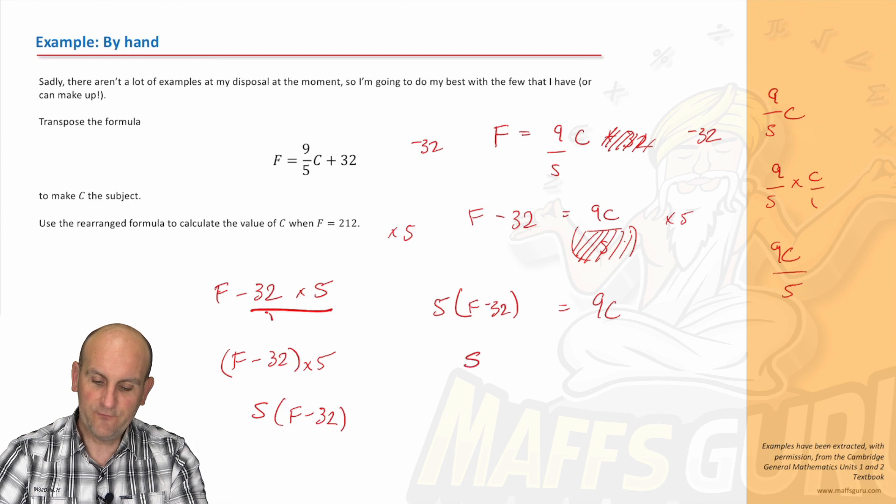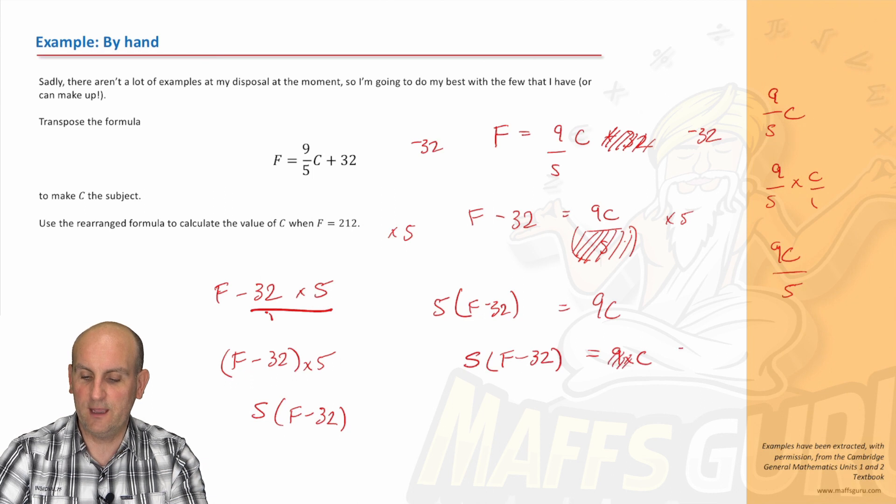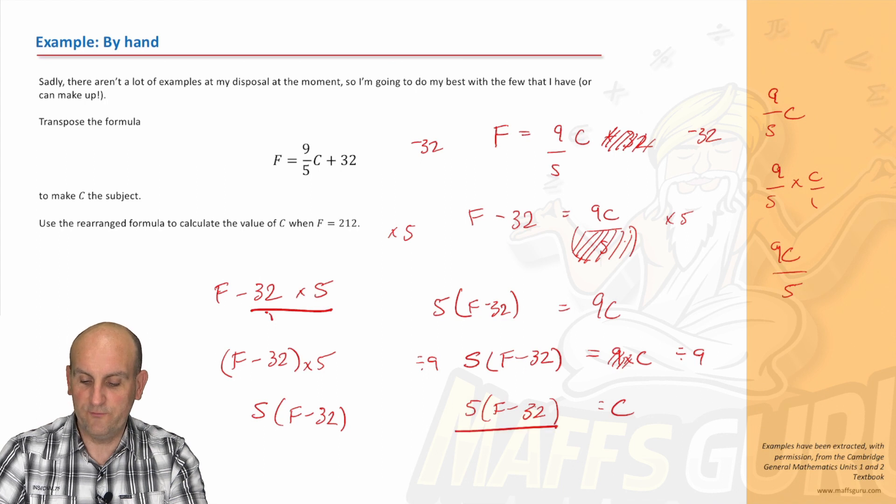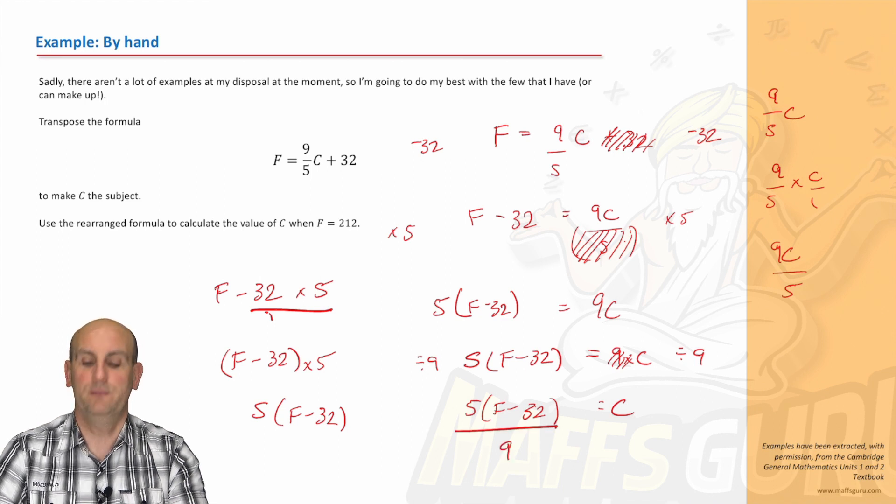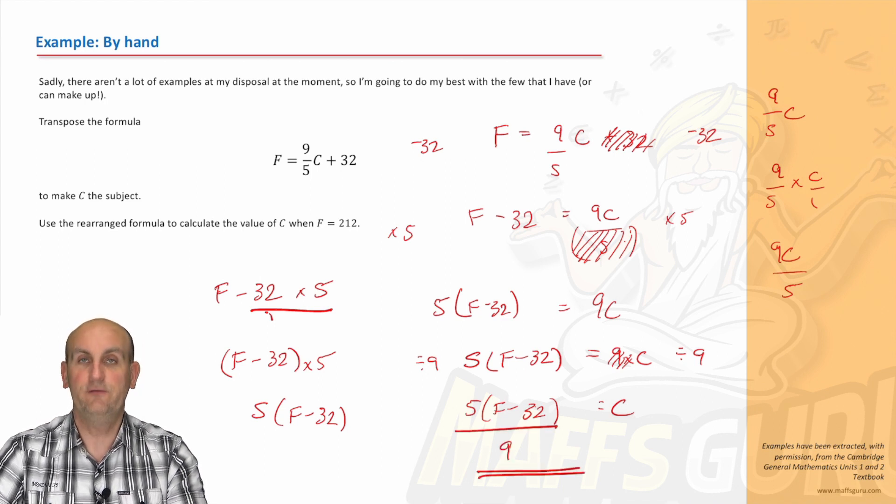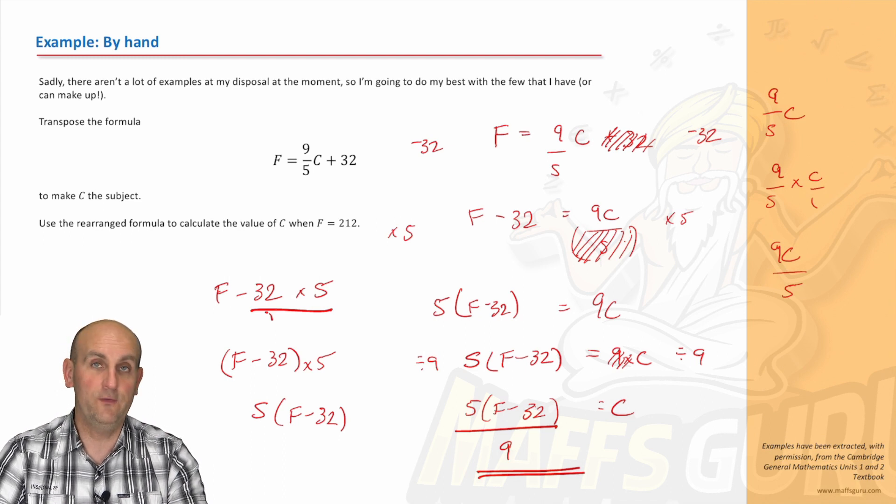Oh, kissy kissy. So 5 times F minus 32 equals 9 times C. I want to get rid of the times by 9, so I'm going to divide by 9 on both sides. That leaves me with C there. The 5F minus 32 is already there, and I'm going to divide all of it by 9. And believe it or not, ladies and gentlemen, there is my transposed equation. Now I know that seems challenging.